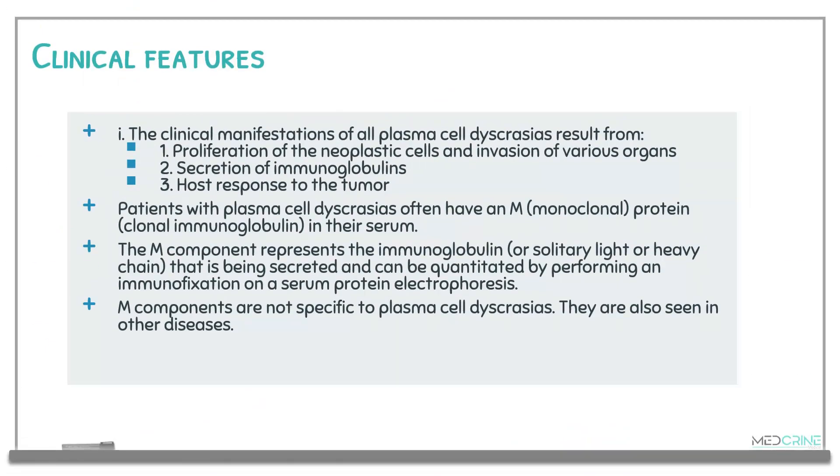The clinical manifestations of plasma cell dyscrasia result from one of three pathways: proliferation of neoplastic cells and invasion of other organs, secretion of excessive immunoglobulins, or the host response to the tumor. Patients have an M protein — a monoclonal immunoglobulin in their serum — which represents a solitary light or heavy chain secreted and quantitated by immunofixation on serum protein electrophoresis. M components are not specific to plasma cell dyscrasias, as they can be found in other diseases.